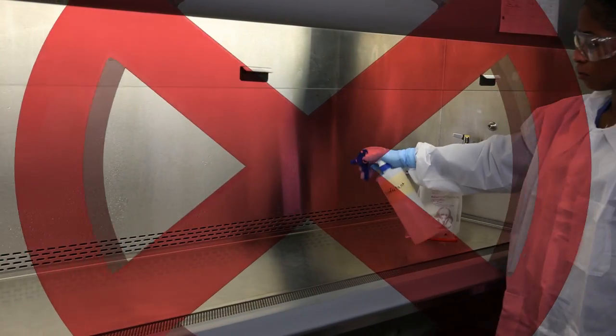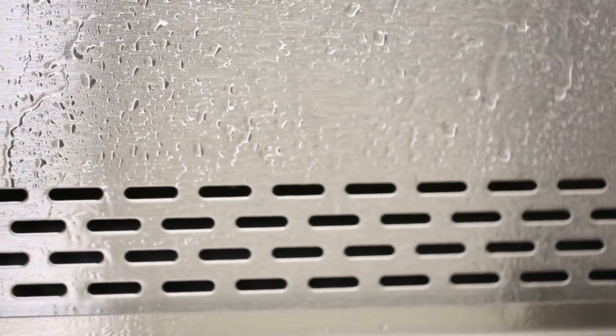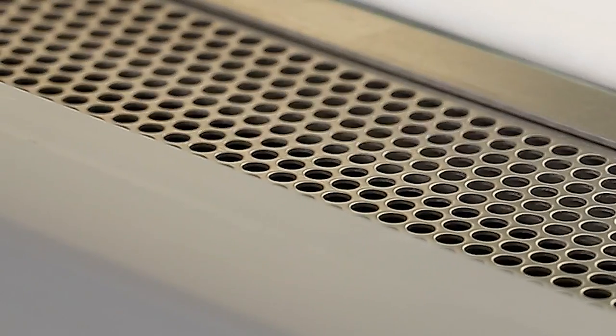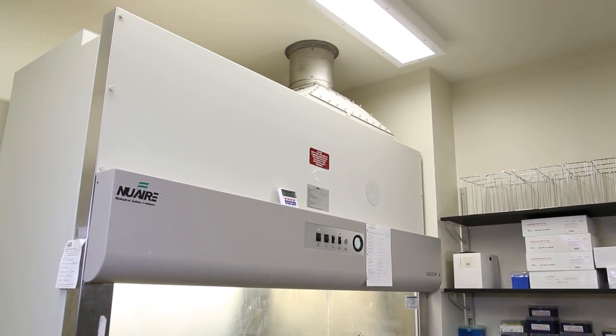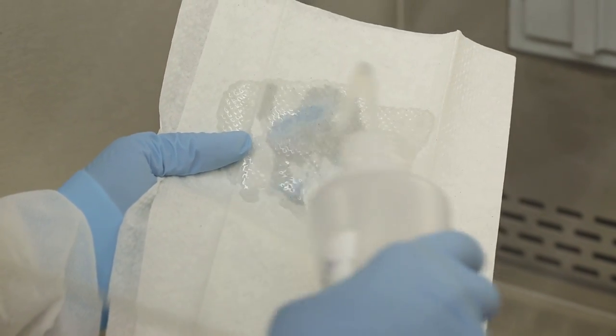It is not recommended to spray disinfectant inside the BSC because the mist can be drawn internally into the grills or HEPA filter, and this can cause pitting of the stainless steel parts inside the BSC or damage to the HEPA filter. It is better to generously moisten a towel and wipe the surfaces.